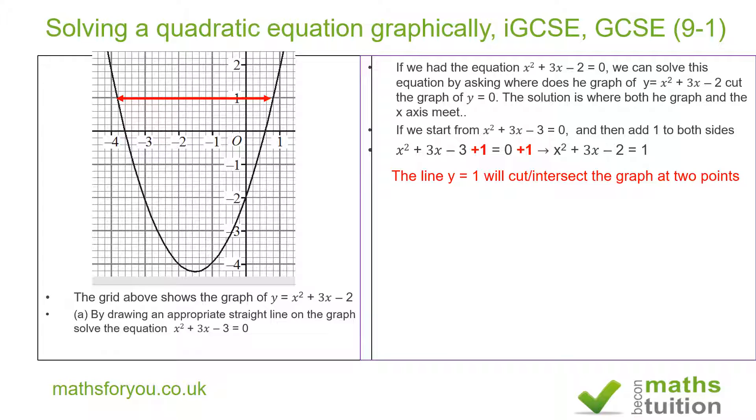Then we project from this point where it cuts the graph of x squared plus 3x minus 2. Project those points, these points here, that one there and that one there onto the x axis. You don't have to do that, but it just helps. We now project those points onto the x axis.